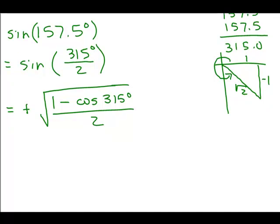Okay, so we need to know the cosine of 315 degrees. That's why I drew this little picture so we could see it easily. I have 1 minus the cosine of 315 degrees. That would be square root of 2 over 2. All over 2. And now we have once again this messy complex fraction.